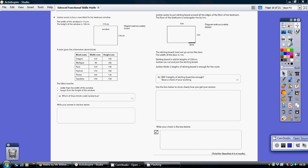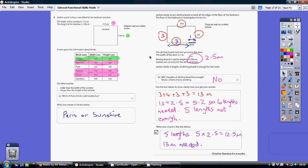Question 8. For the first part, the left-hand side part, we need to buy a blind. The blind must be wider than the width of the window and longer than the height of the window.